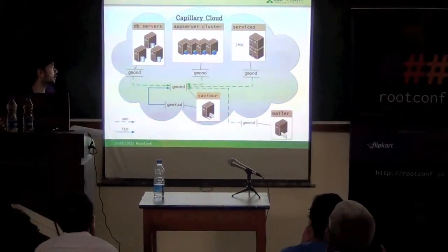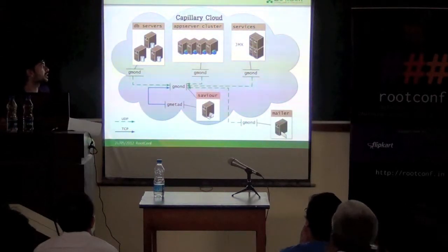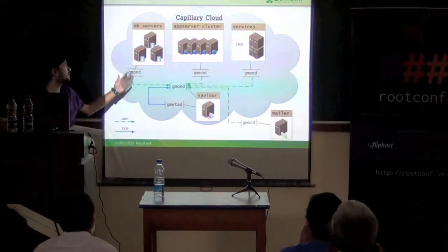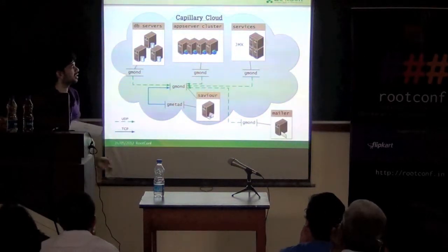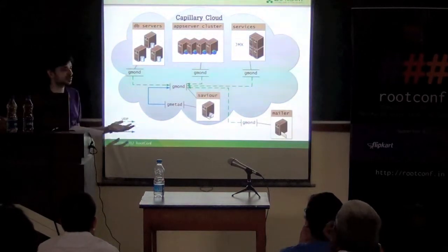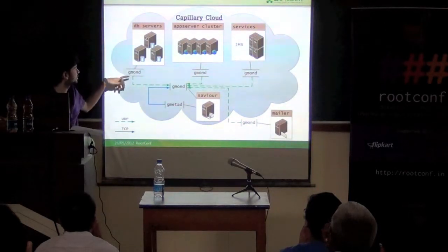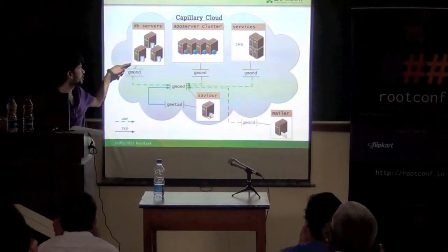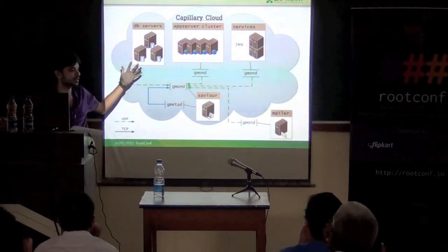This is our current deployment architecture. Our current servers can be divided into three major categories: our DB servers which have a master-slave type of configuration, our app server cluster, and our services servers which are basically servers which host long running Java services.